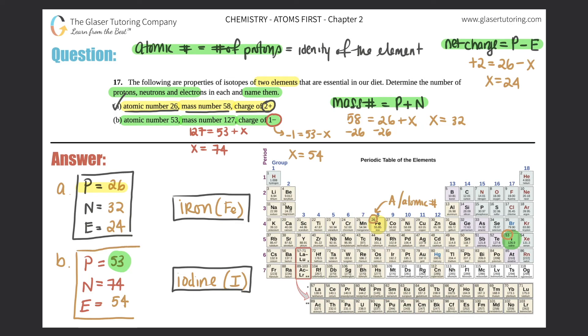So you have 53 protons, 74 neutrons, 54 electrons, and the identity or the name of the element is iodine.